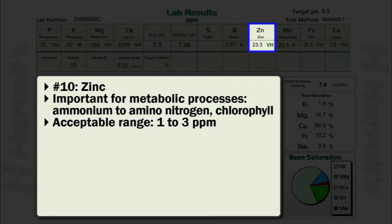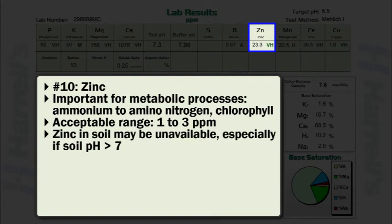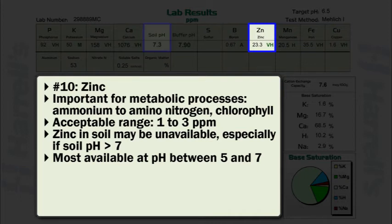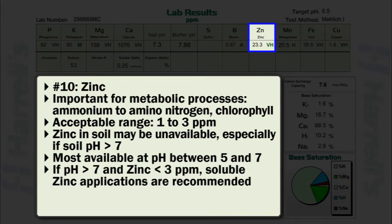So while many soils may contain large quantities of zinc, the possibility for zinc to be unavailable exists, especially if soil pH is greater than 7. As previously noted, soil pH plays an important role in the availability of zinc. Zinc is most available at soil pH levels greater than 5 and less than 7. If soil pH is greater than 7 and zinc is less than 3 parts per million, applications of soluble zinc are recommended.